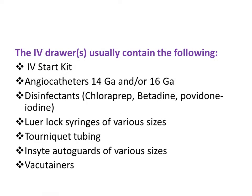The IV drawer typically contains IV stock bits, angiocatheters in 14-gauge and 16-gauge, disinfectants, Luer-lock syringes of various sizes, tourniquet, gauze, auto guards of various sizes, and tourniquets for blood collection.